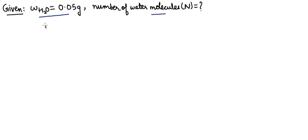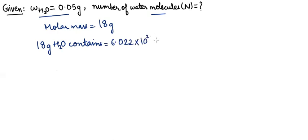We know that molar mass of water is 18 gram. So as per the mole concept, 18 gram water, that is H2O, contains 6.022 times 10 raised to power 23 H2O molecules—that is Avogadro's number. Therefore, 0.05 gram H2O will contain: